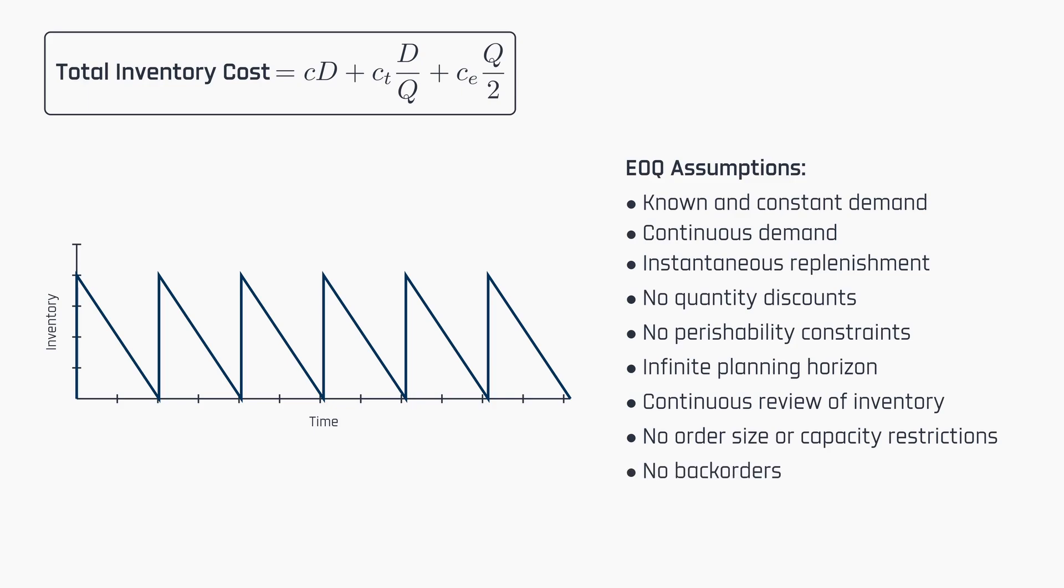Lastly, the model takes for granted that cost parameters such as unit, setup and holding costs are constant over time. Note that we are not considering the potential costs of stockouts or shortages as the model theoretically mitigates this risk. By operating under the premise of constant and known demand, ensuring timely replenishments, and disallowing back orders, we effectively negate the possibility of sudden stockouts. It's important to realize that the EOQ model is most effective when these conditions are met, but such scenarios are rare in real-world applications.